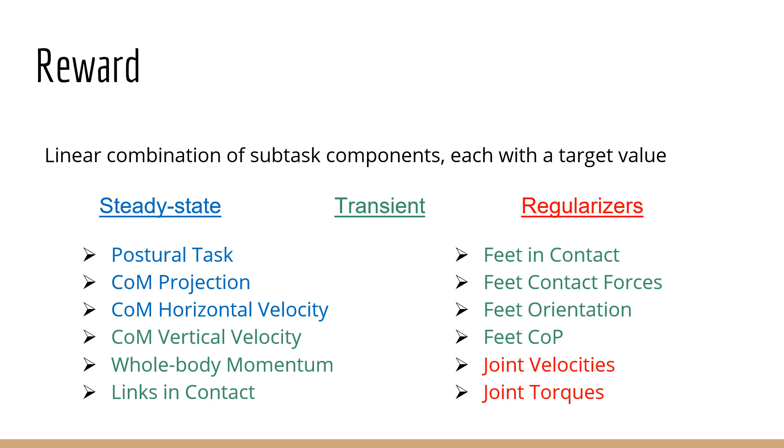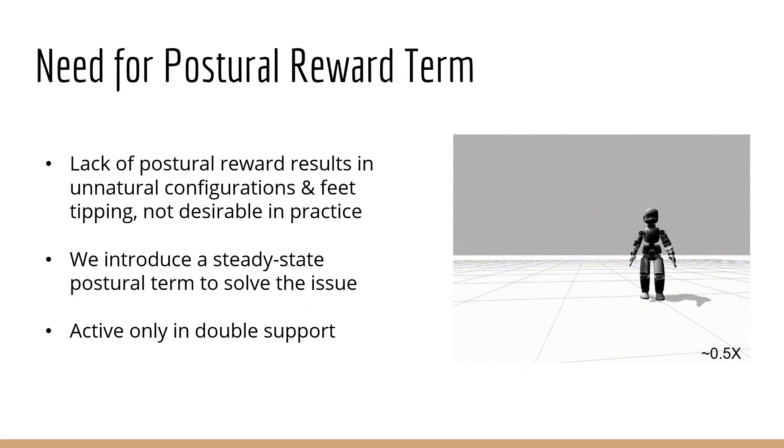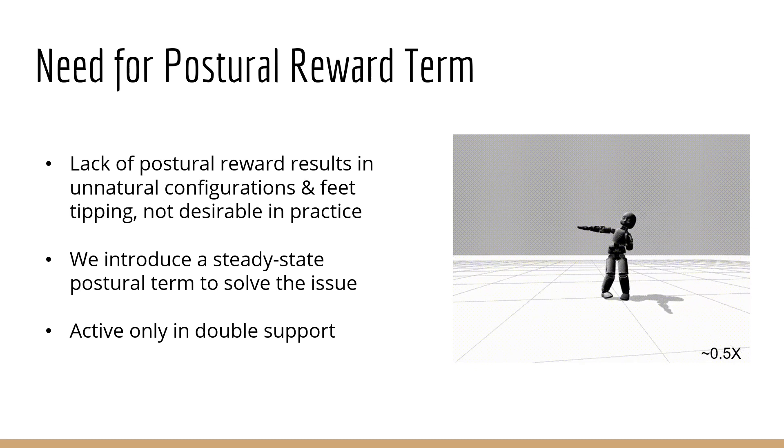Also, the transient terms include feet in contact, feet contact forces which is kept balanced between the feet, and feet orientation and feet center of pressure. Finally, the regularization terms penalize high joint velocities and torques. The need for introducing a postural reward term is exemplified in the video on the right, showing an unnatural steady-state configuration learned by the policy when this term is excluded.